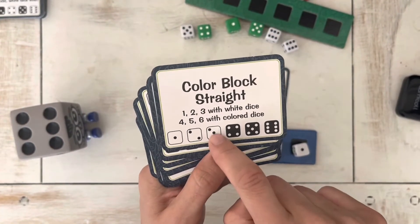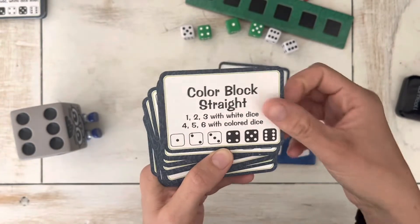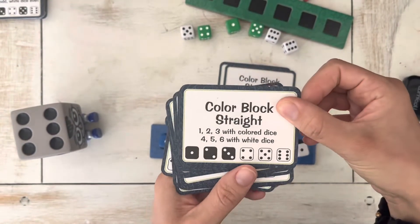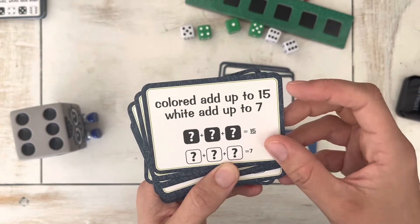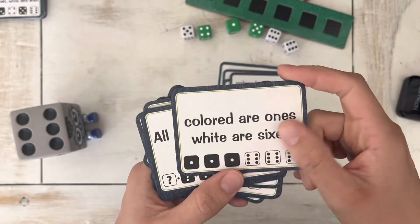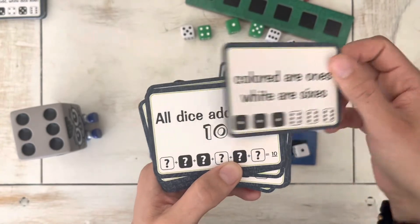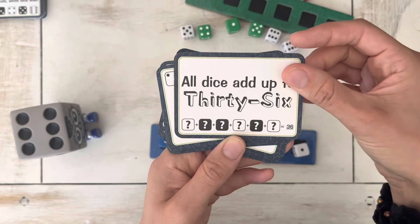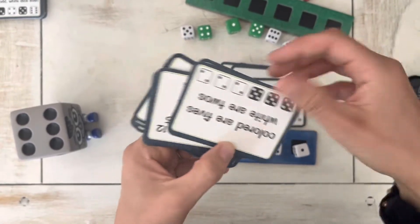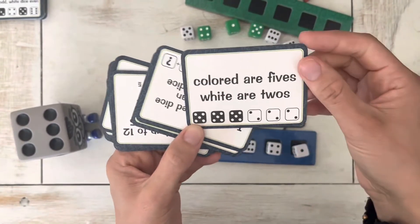Color block straight. So one, two, three white dice and four, five, six black. You have to roll till you get that. Colored add up to fifteen. White add up to seven. Colored are ones, white sixes. All add up to ten. All add up to thirty-six.